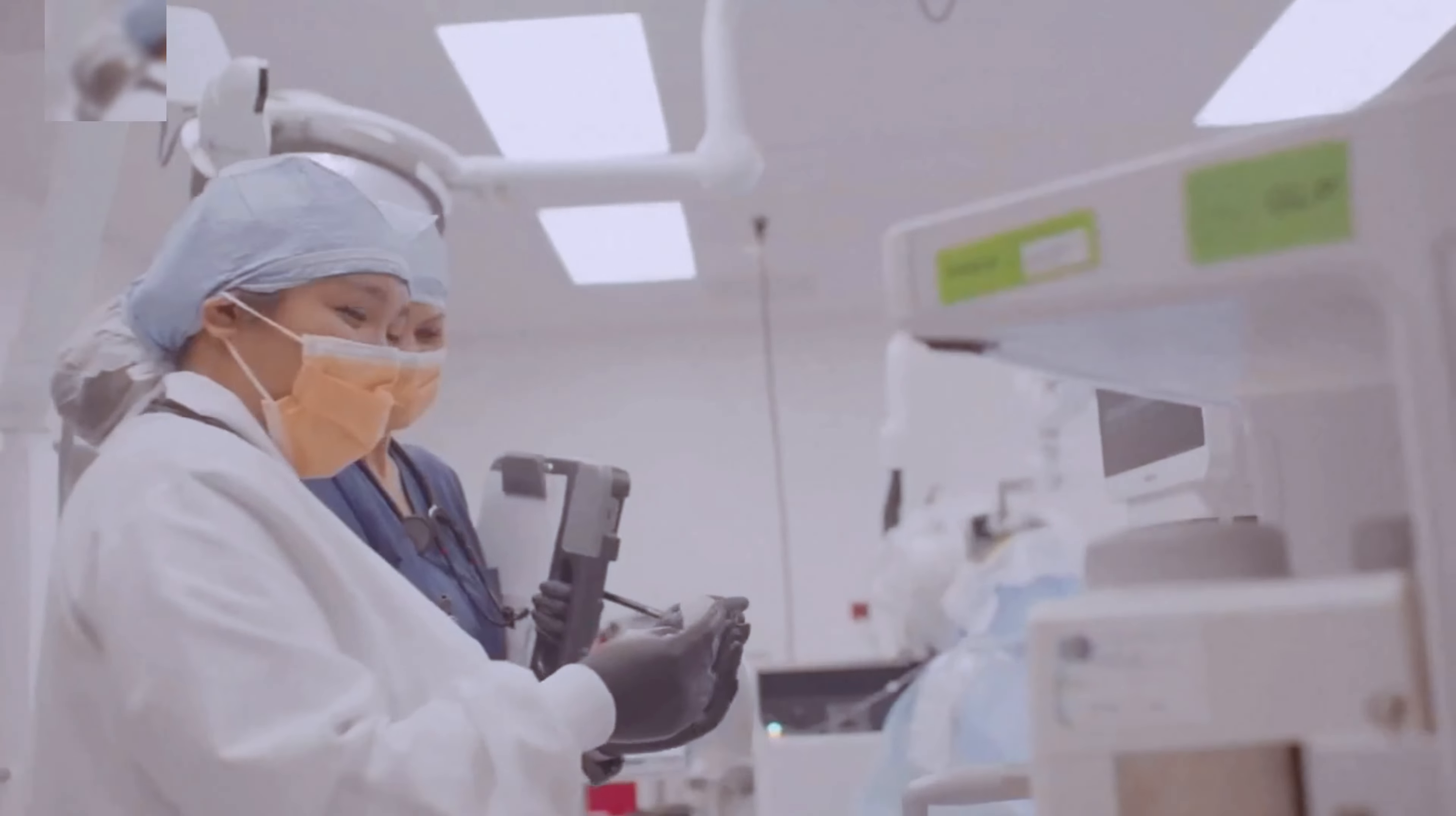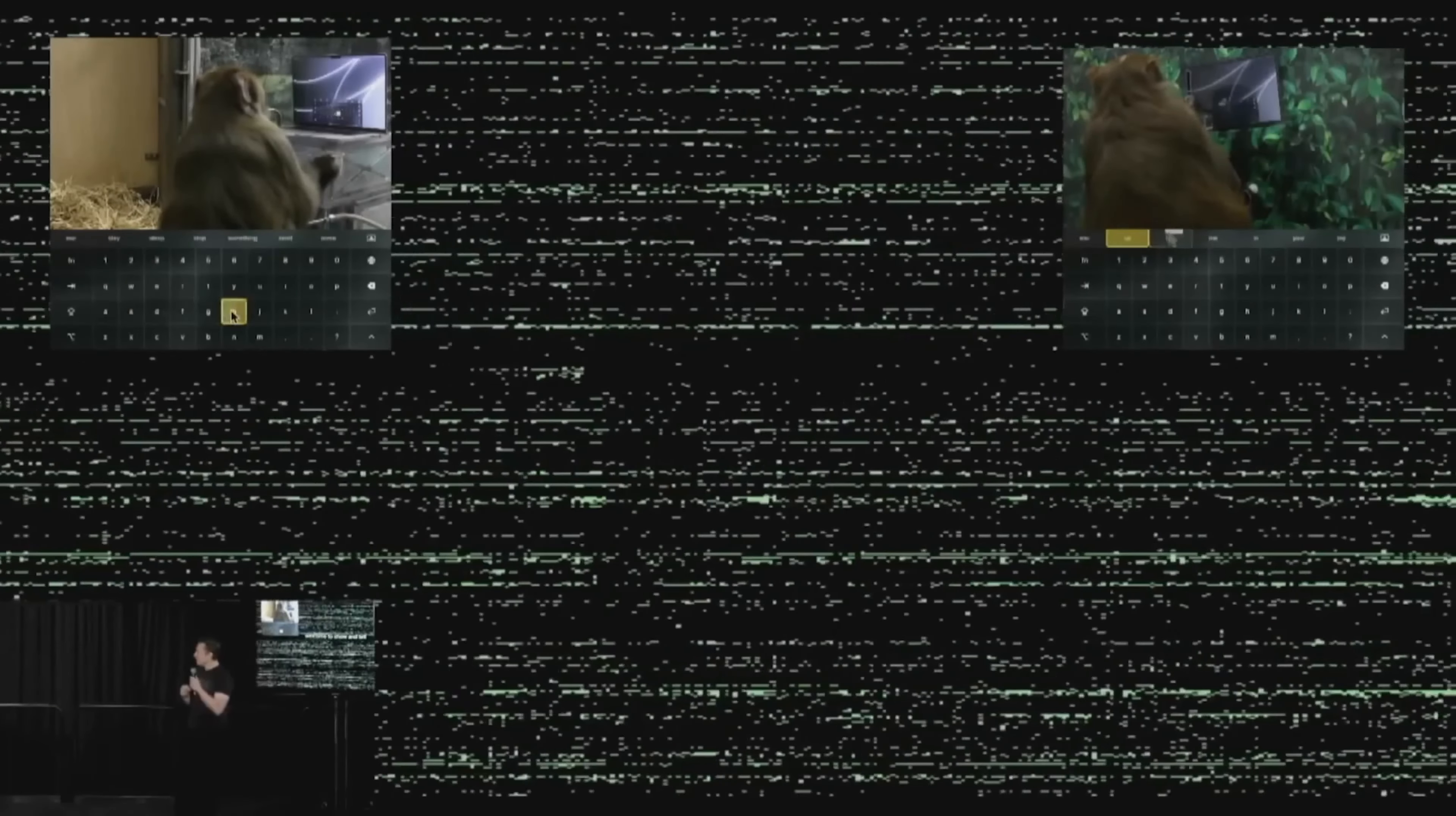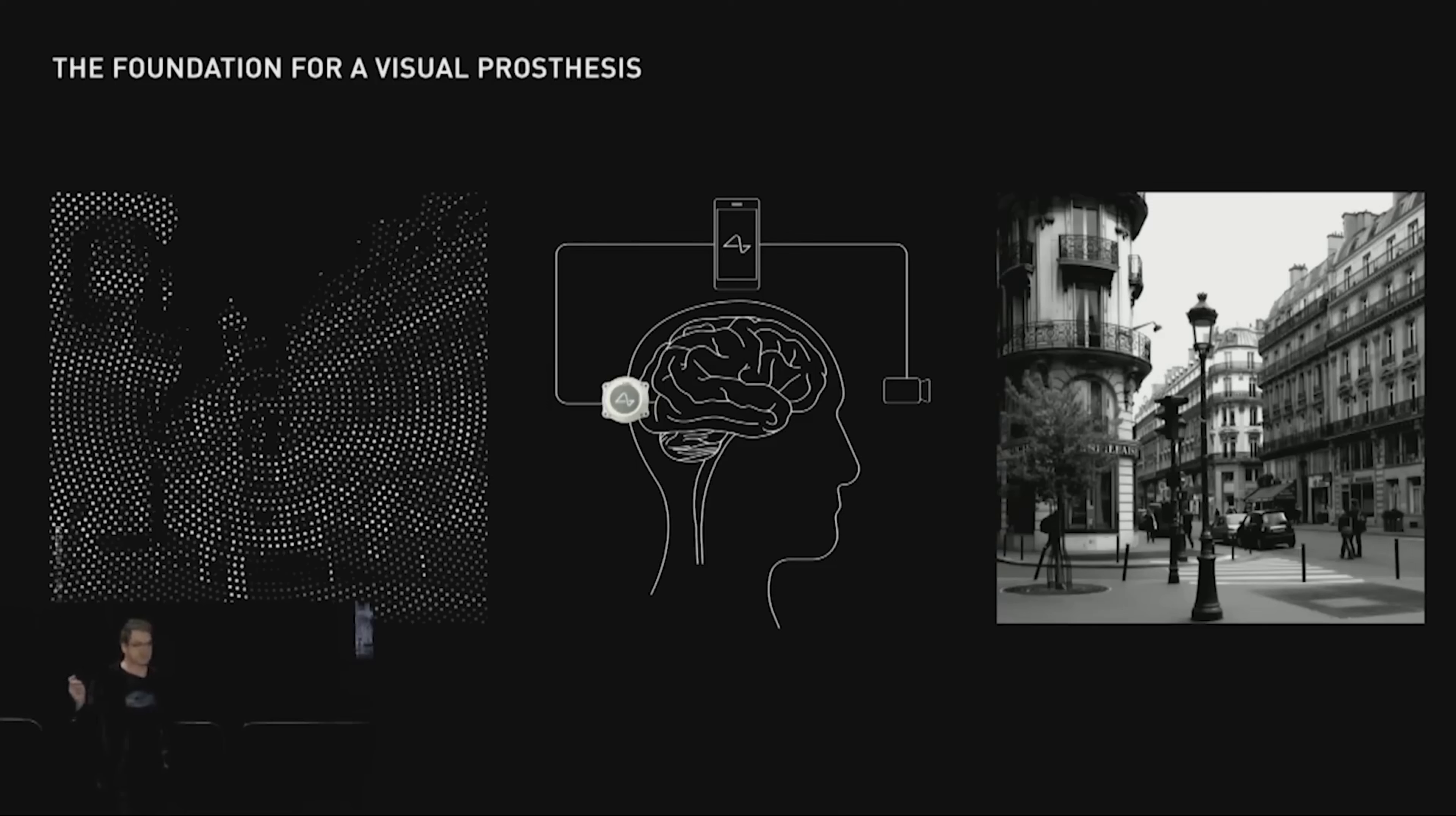The N1 chip then sends electrical signals through the electrodes into your brain in specific patterns, allowing you to perceive the visual information around you. At a press conference, the Neuralink team shared a visual representation of what they aimed to achieve with their visual prosthesis device. They showed a photo of a European street corner alongside a pixelated representation of the same image. While there are limitations such as lack of color and the pixelated nature of the vision, it's still an impressive demonstration of Neuralink's capabilities in providing computerized vision.